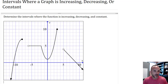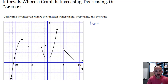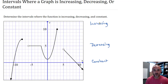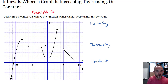Pause the video and copy the graph if you're taking notes. The first thing I want to do is separate the three categories: intervals where the function is increasing, intervals where it's decreasing, and intervals where it's constant. When looking at where a function is increasing, decreasing, or constant, it's important to read left to right.